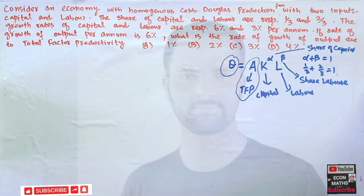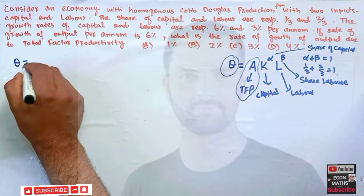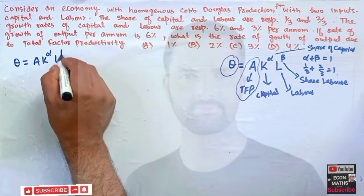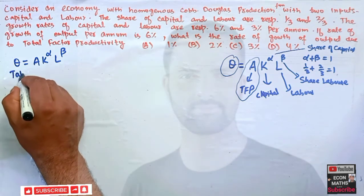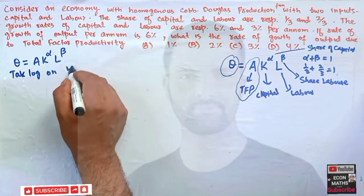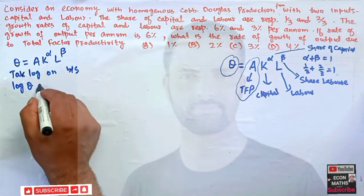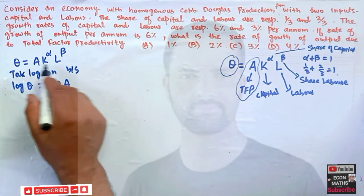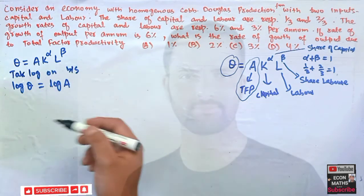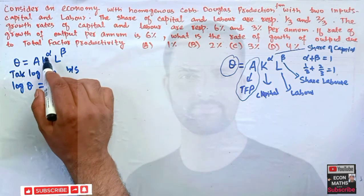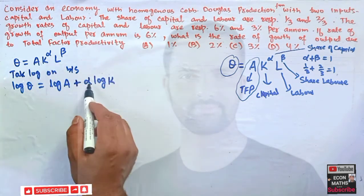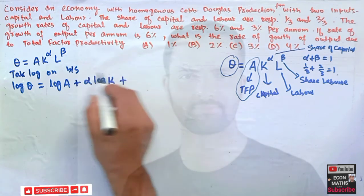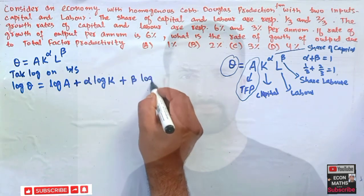Starting with Q = A · K^α · L^β, I will take the log on both sides. This gives: log Q = log A + α·log K + β·log L, since multiplication becomes addition under logarithms and the exponents become coefficients.